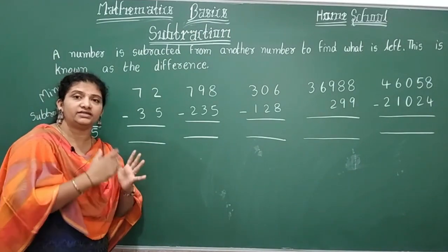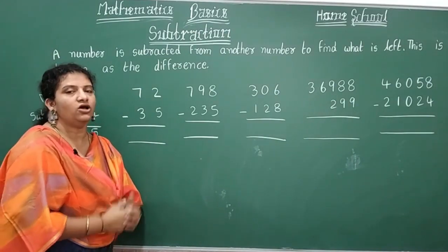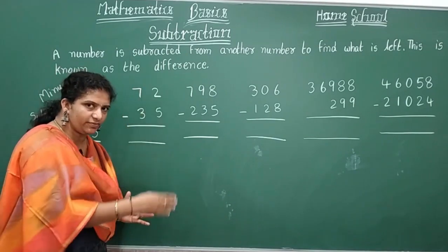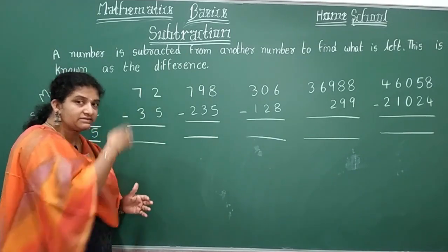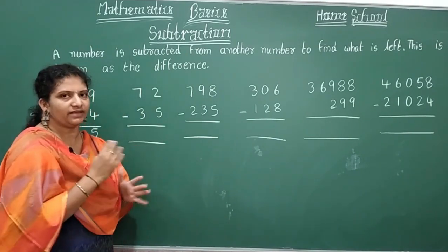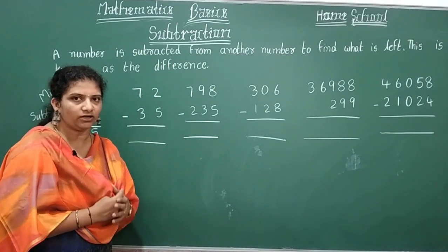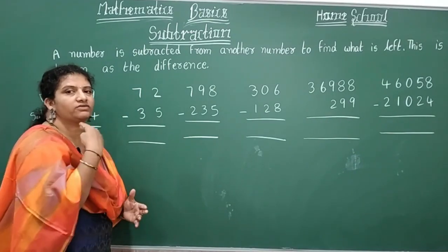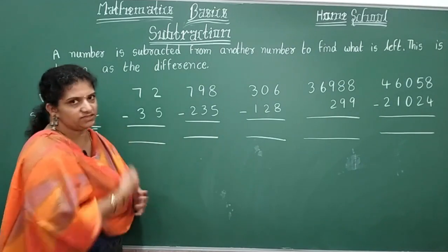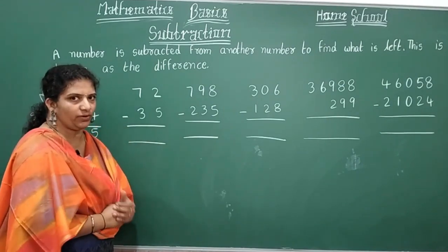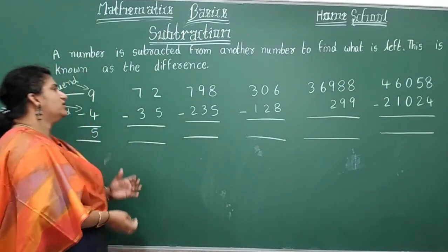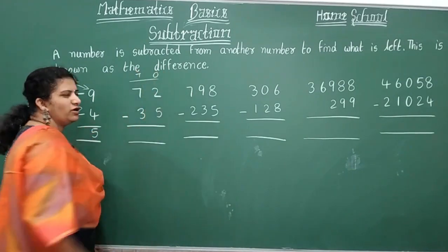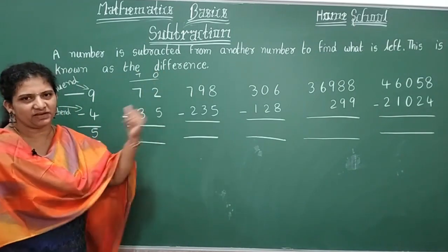When writing subtraction with two or more digits, always place the digits in order: units digit, tens digit, hundreds digit — just as in addition. Always start subtracting from the ones place, that is the units digit. This is the ones place and this is the tens place.